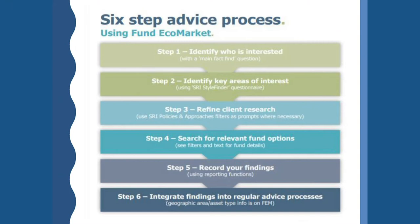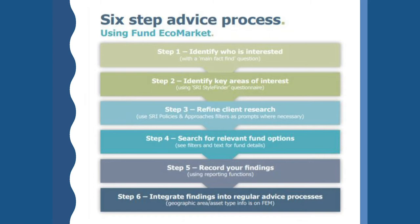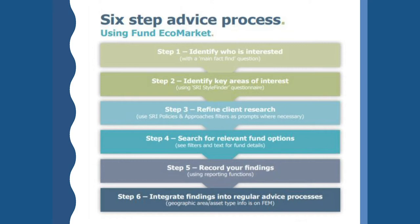This next slide shows an example six-stage advice process you could use to build Fund EcoMarket into the way you operate. The first task is to build an ethical fact-find question into your standard fact find so you can identify who is and isn't interested. The next step is to identify core areas of interest — get a feel for what kinds of things the client is interested in. You can use our Style Finder tool online to help: clients fill in the questionnaire and it tells you the top three SRI styles that suit your client's opinions. Step three is about refining your client research — using the filter options on Fund EcoMarket as prompts to work out which areas your client would like to support or avoid and what's important to them, then generating a long list of potentially appropriate fund options.